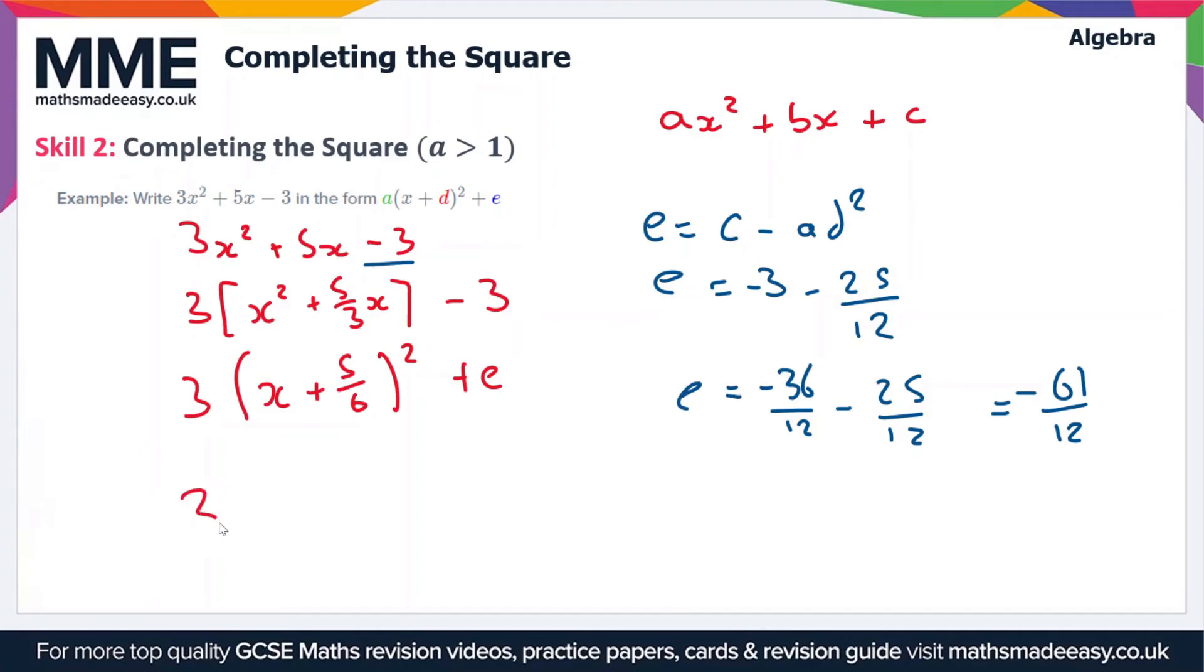So now we can finally rewrite the expression as 3 lots of x plus 5 over 6 all squared minus—excuse me, that should be 61 divided by 12. So this is now in the form a lots of x + d all squared plus e.